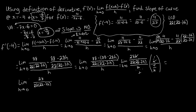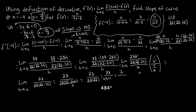Now we can pass to the limit. Substituting h equals 0 gives 28 over 22 times 22, which is 28 over 484. Both 28 and 484 are divisible by 4: 28 divided by 4 is 7, and 484 divided by 4 is 121. So the limit evaluates to 7 over 121.